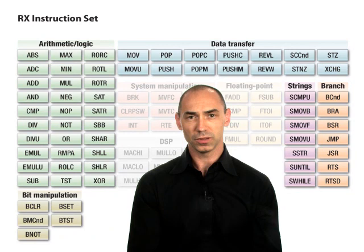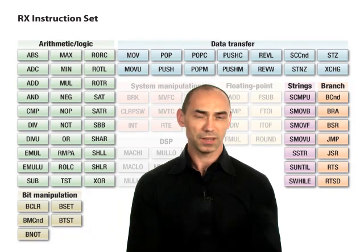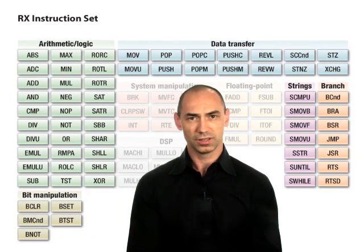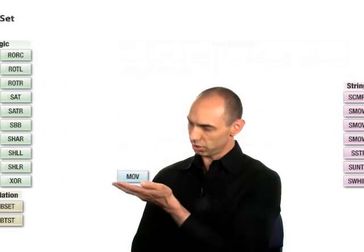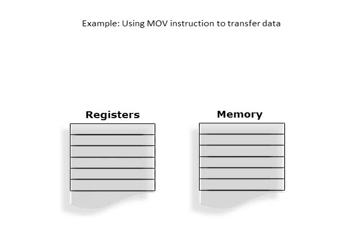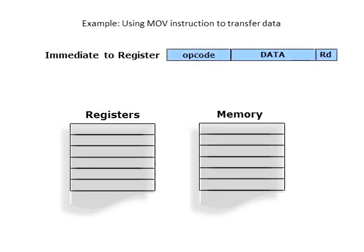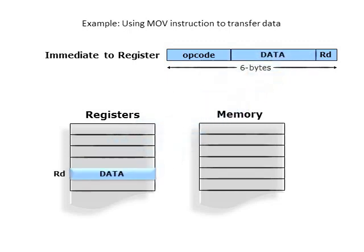The RX instructions are variable length, with the exact length depending on the data size and the addressing mode used. Let's take a look at the MOVE instruction as an example. The MOVE instruction can be used to do an immediate placement of data into a register. For placing 32-bit data into a register, the instruction consists of an opcode, the 32-bit data, and the location of the destination register. The instruction length is 6 bytes, and when processed, the 32-bit data is moved into the destination register.